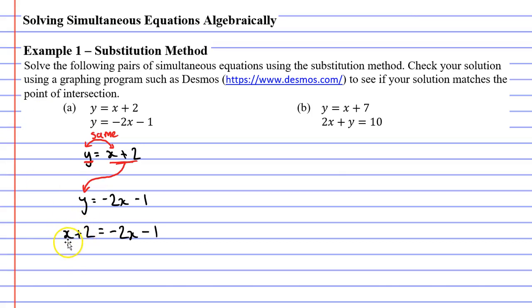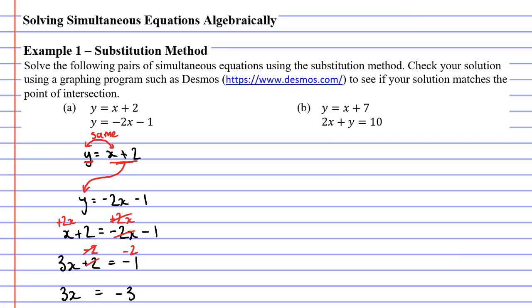We've now got an equation with only one variable, x, and we can solve it. We're going to start by adding 2x to both sides — this gets rid of the negative 2x on the right, and x plus 2x is 3x, so we get 3x plus 2 equals negative 1. We'll subtract 2 from both sides, giving us 3x equals negative 3. Then divide both sides by 3, so x equals negative 1.